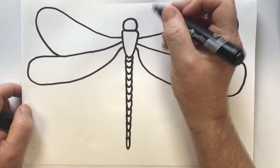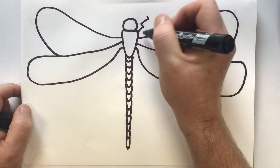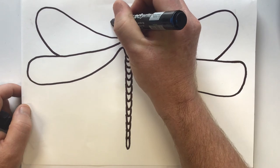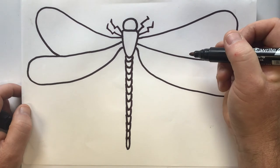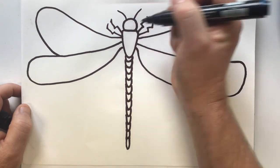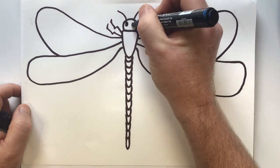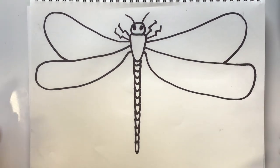Okay, let's put some little legs on. We're just going to do some zigzag lines. Same on the other side. Okay, some little antenna. Maybe even some eyes. And there we have a beautiful dragonfly.